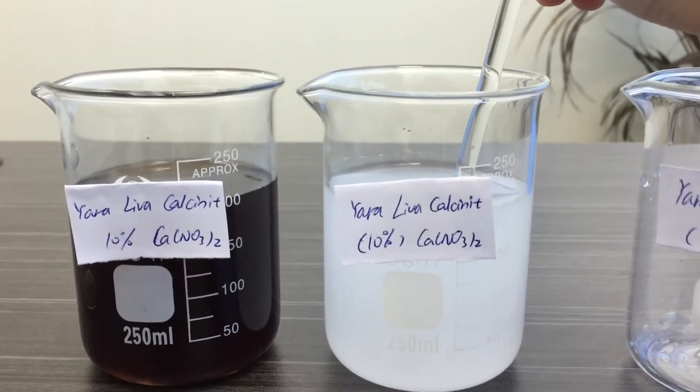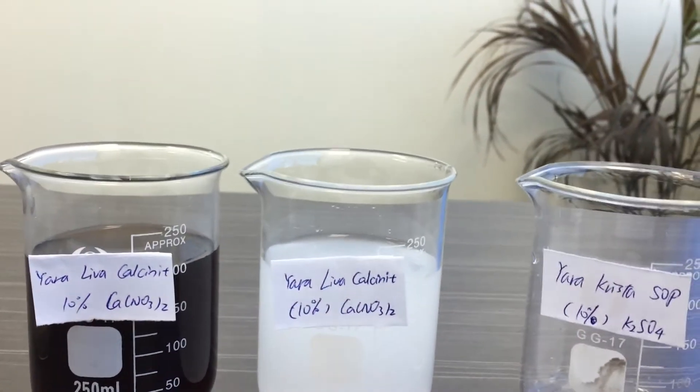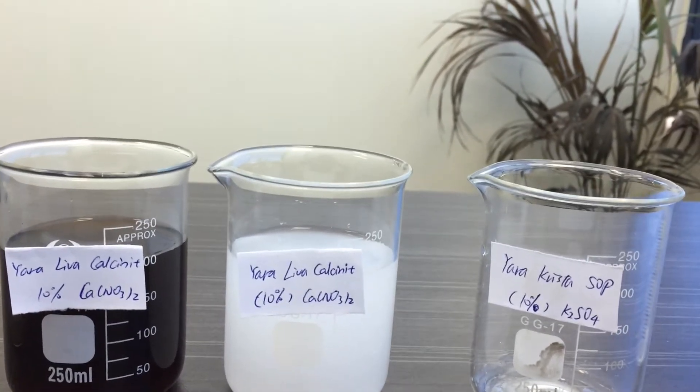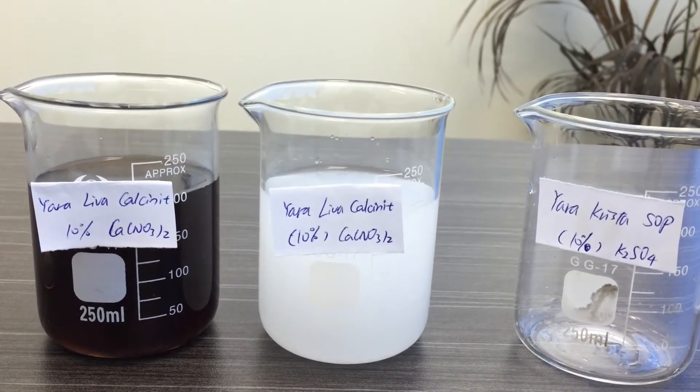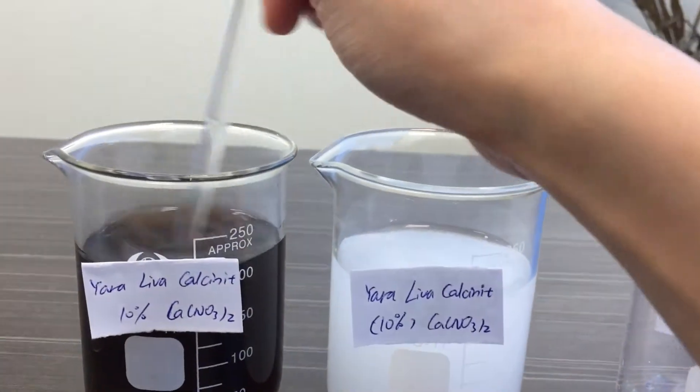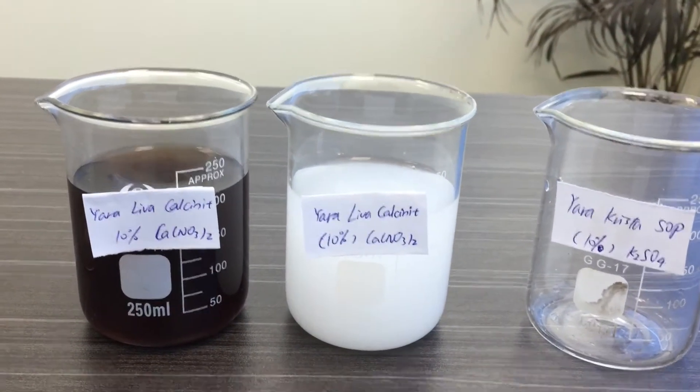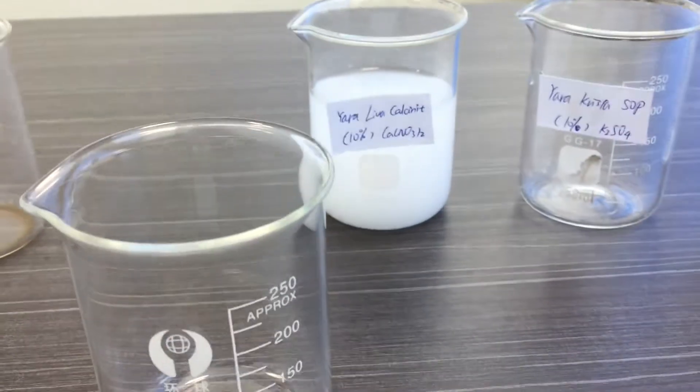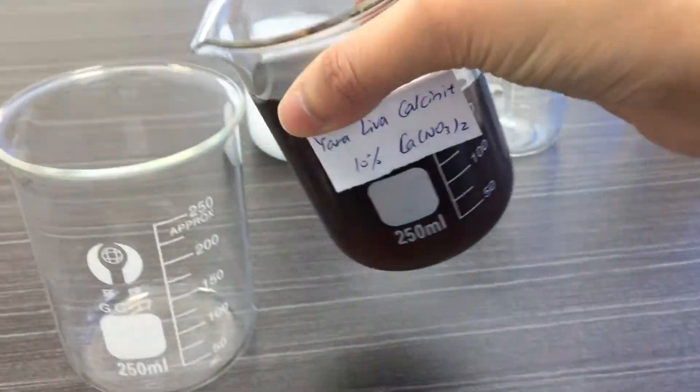So as we can now see after one minute of vigorous stirring, the right one is calcium nitrate mixed solely with potassium sulfate. It's really blurry and precipitation has formed, whereas the left one is still a clear solution. Here's the empty beaker, and as you can see the solution is just really clear.